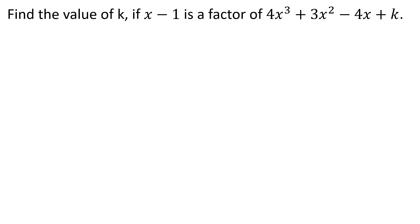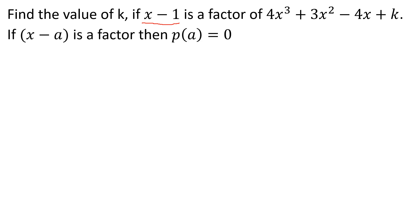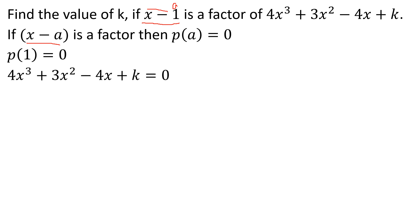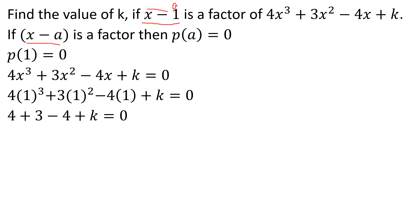For the next example with P(x) = 2x + 4, if x minus 1 is a factor, then P(1) must equal 0. Comparing x minus A, A equals 1. Substituting P(1) = 3 + k = 0, so k equals minus 3.